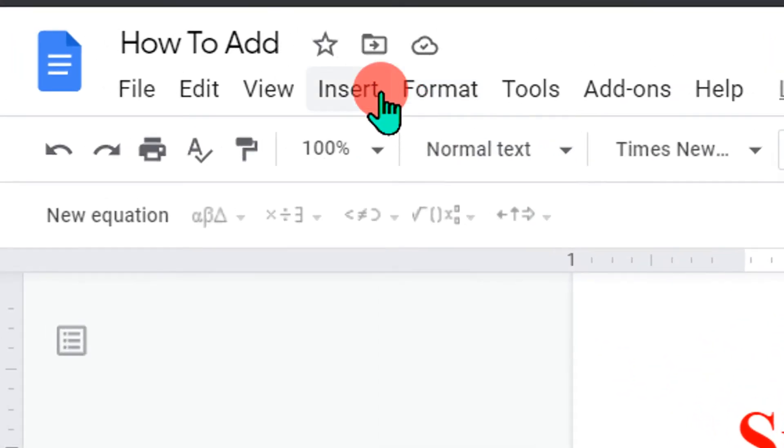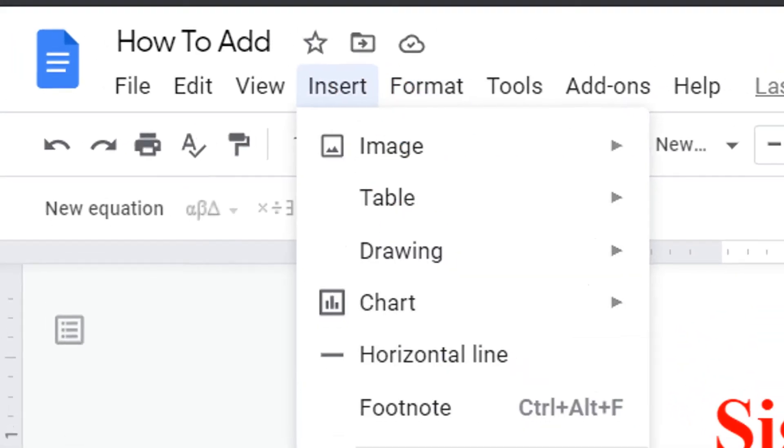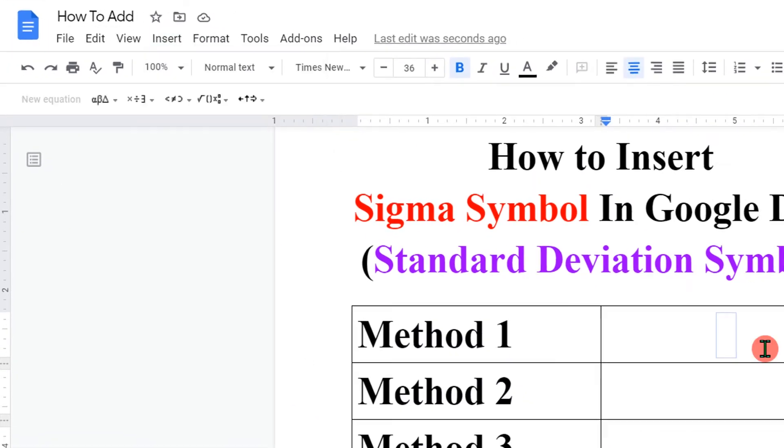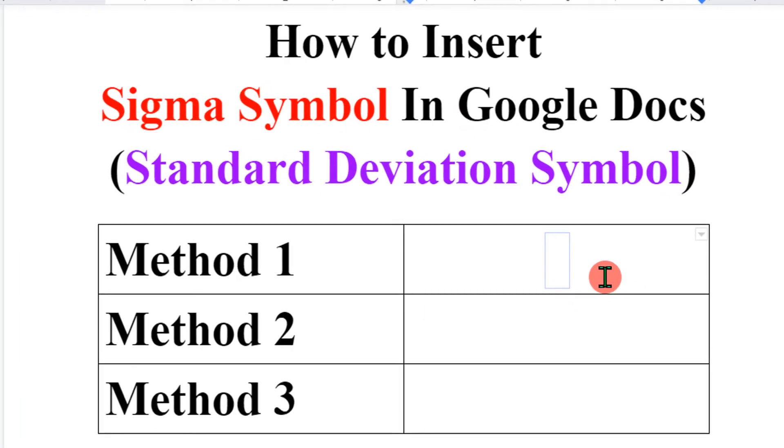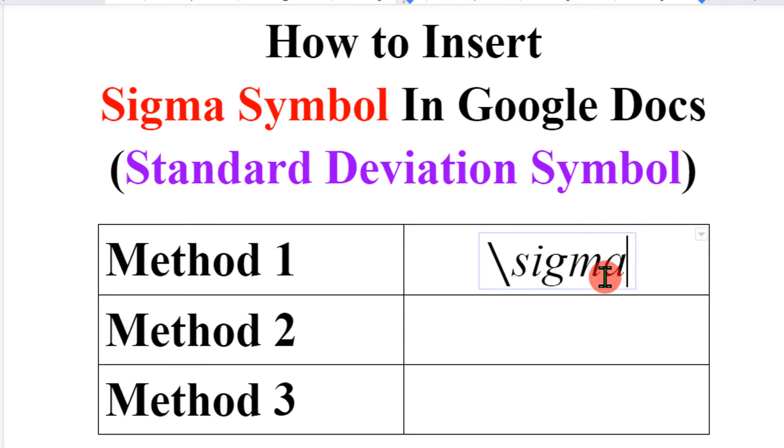In the first method, go to the Insert option and click on Equation. You will see a blue box with the cursor blinking inside it. Now press backslash on your keyboard, then type 'sigma' and press the space bar to insert the symbol.